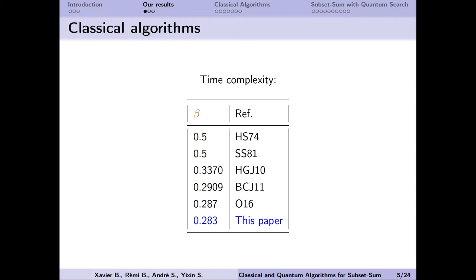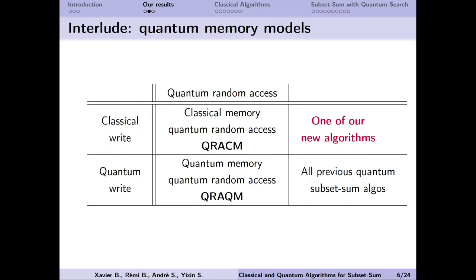Before I can present it to you, you need to know more about quantum memory models. In order to obtain quantum speedup, we always need quantum random access to the data. That means, be able to read all the data in superposition. However, we may or may not assume access to quantum write.